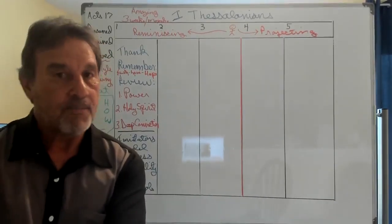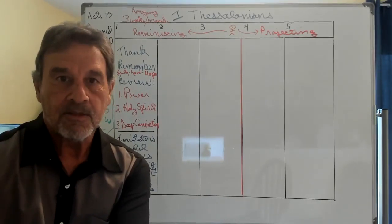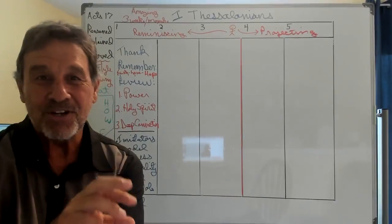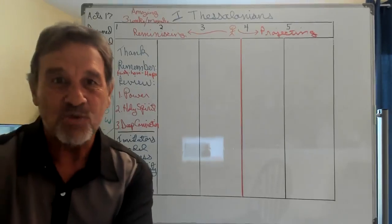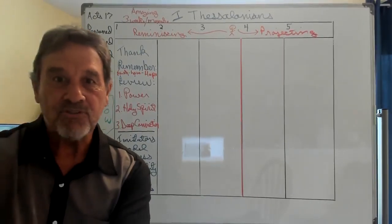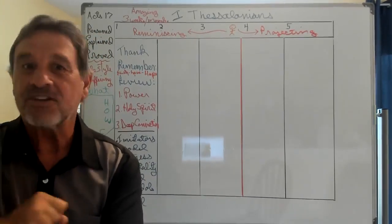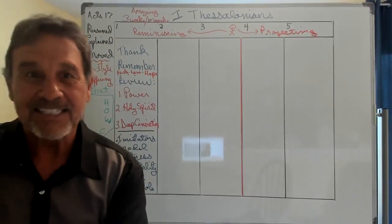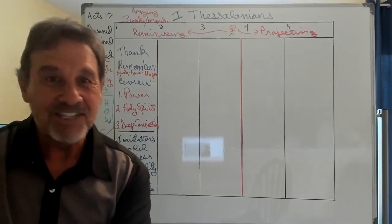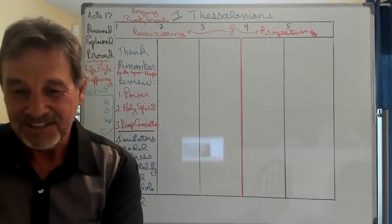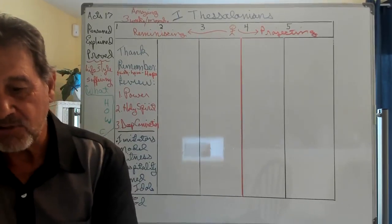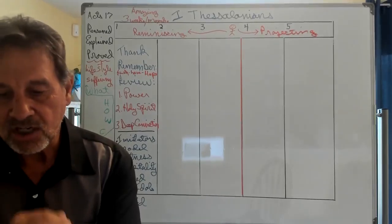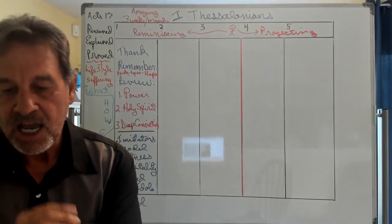The Lord's message rang out from you, not only in Macedonia and Achaia. Your faith in God has become known everywhere. Mind you, that's in three weeks or three months. You think that's an effective way of planting a church when you do it in the power and the Holy Spirit with deep convictions? And you live a lifestyle that is genuine, and they recognize it, and the people see that, and they begin to imitate you. It's going to go out all over. That's how you build a reputation. You don't have to spend exorbitant amounts of money on advertisement. You don't have to have padded seats in your church. You don't even need a building. There's no mention of a building here. Therefore, we do not need to say anything about it, for they themselves report what kind of reception you gave us. This is the bottom line: how you turned to God from idols to serve the living and true God, and to wait for his son whom he raised from the dead, Jesus, who rescues us from the coming wrath.